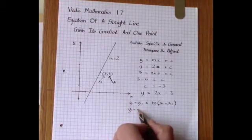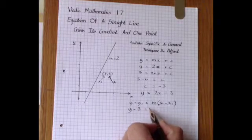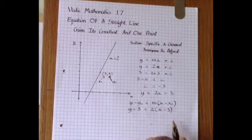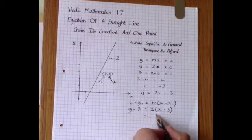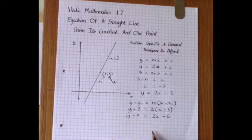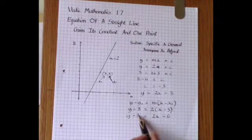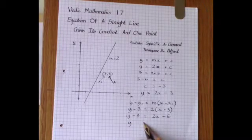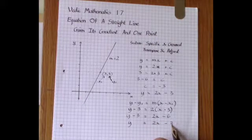So it becomes y minus 3 equals 2 times x minus 3. Multiply out the brackets, it's 2x minus 6, and moving this 3 over we get y equals 2x minus 3.